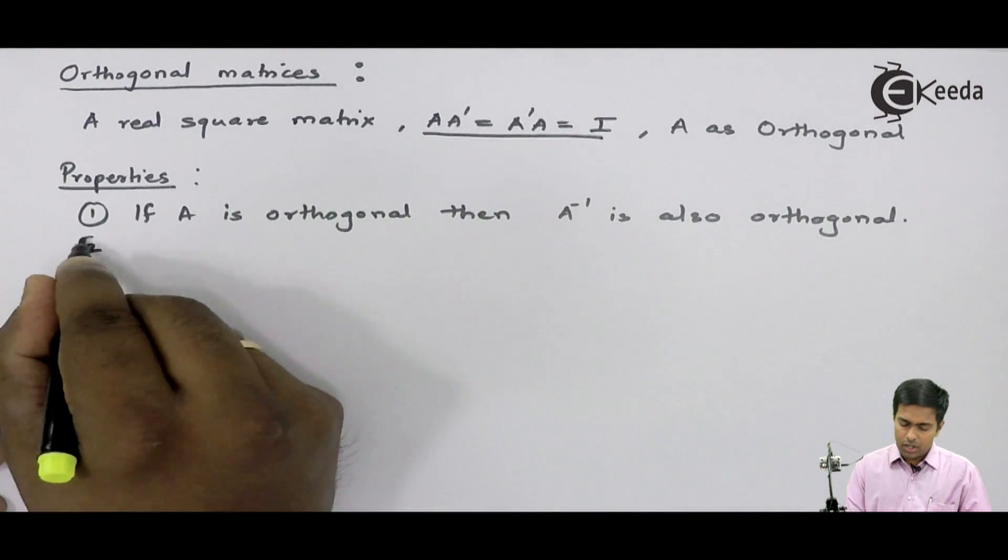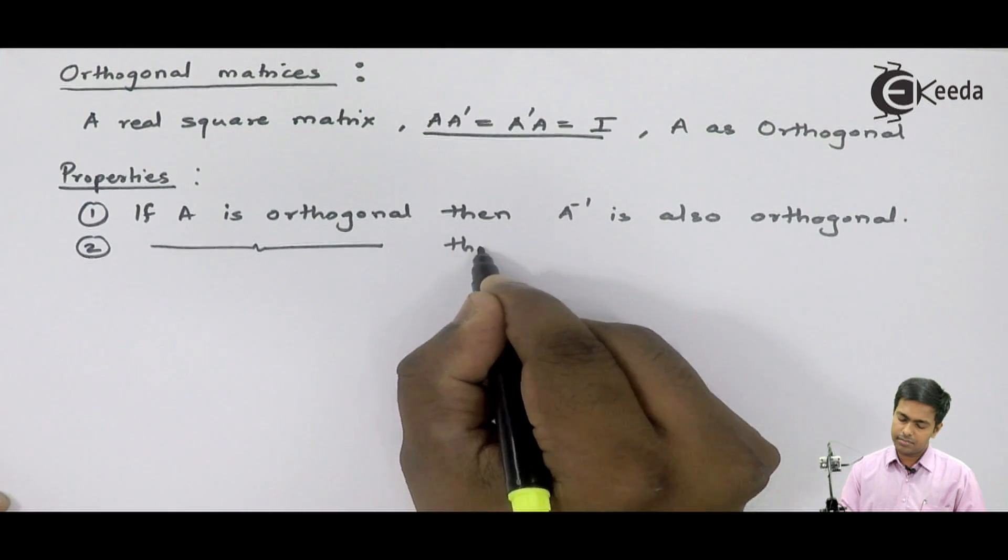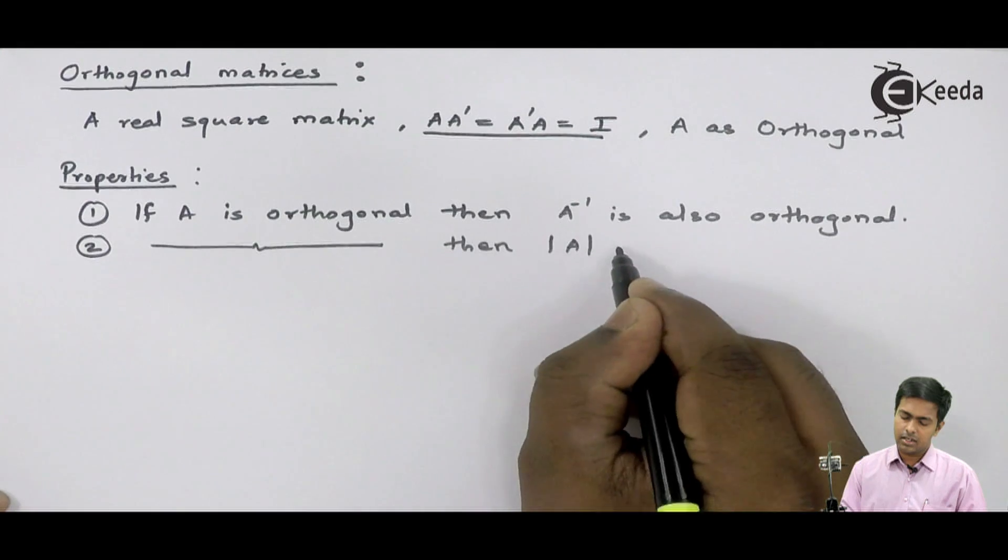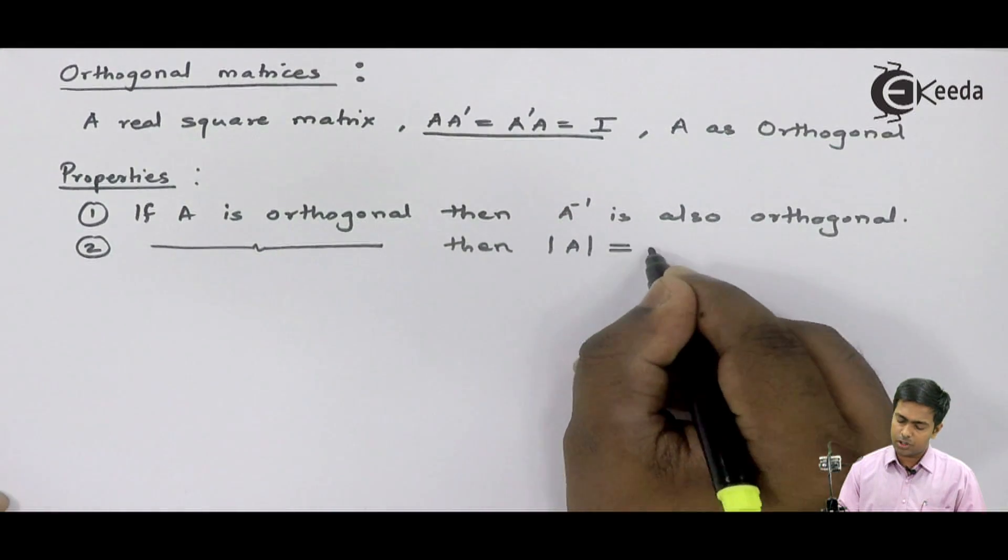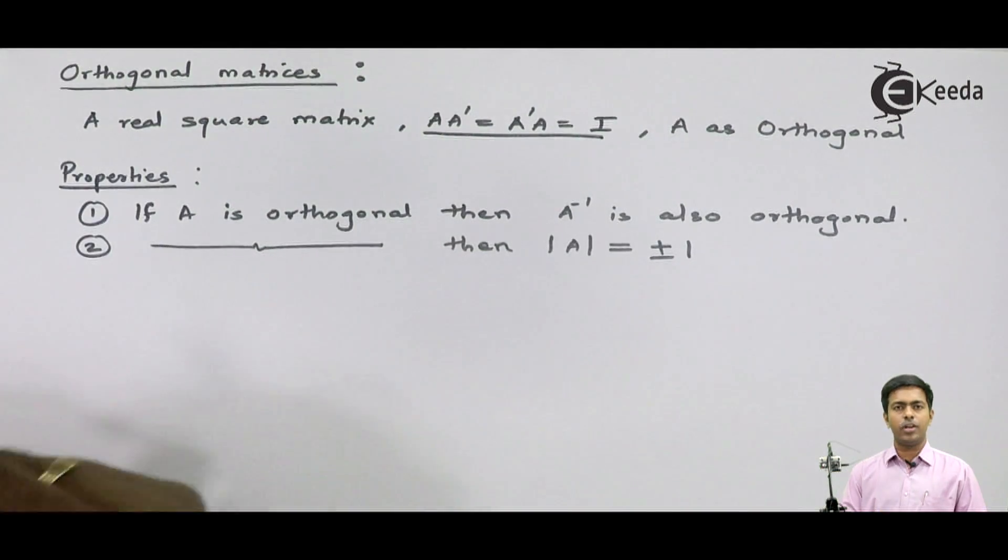Now, the second property is if A is orthogonal matrix, then its determinant, that is, determinant of that orthogonal matrix is equal to plus or minus one. Its value will be plus one or minus one.